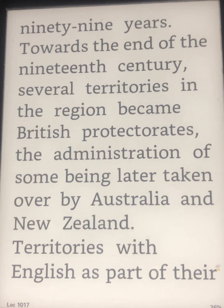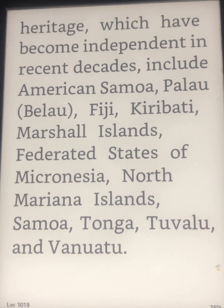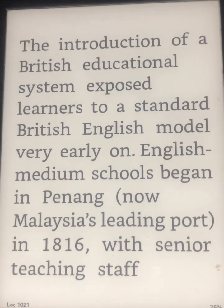Towards the end of the 19th century, several territories in the region became British protectorates, the administration of some being later taken over by Australia and New Zealand. Territories with English as part of their heritage which have become independent in recent decades include American Samoa, Fiji, Kiribati, Marshall Islands, Federated States of Micronesia, North Mariana Islands, Samoa, Tonga, Tuvalu, and Vanuatu. The introduction of a British educational system exposed learners to a standard British English model very early on.